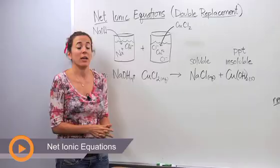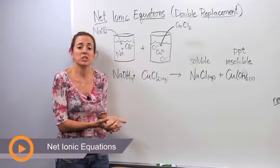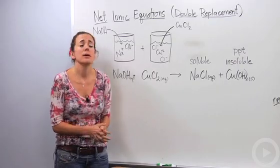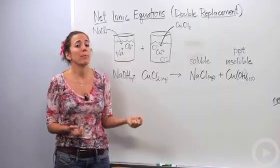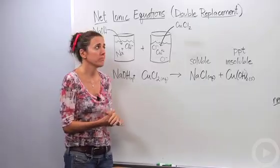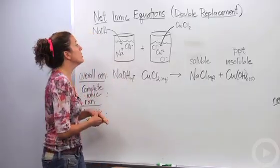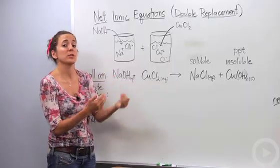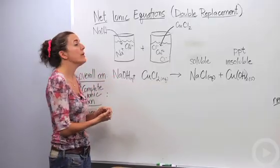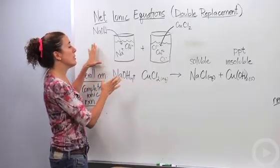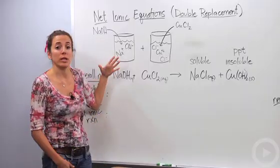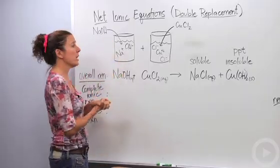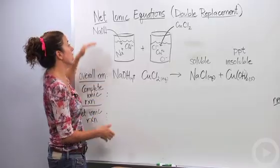We're going to talk about net ionic equations, which is actually an extension of double replacement reactions. Let's go into detail on what exactly is happening when you have a double replacement reaction. A double replacement reaction is when two ionic compounds come together and switch partners. Typically, it's in an aqueous solution, meaning these compounds are in water making solutions.